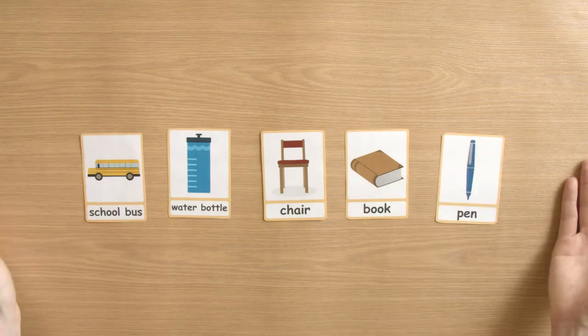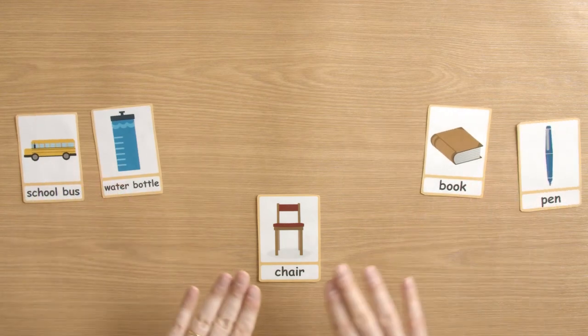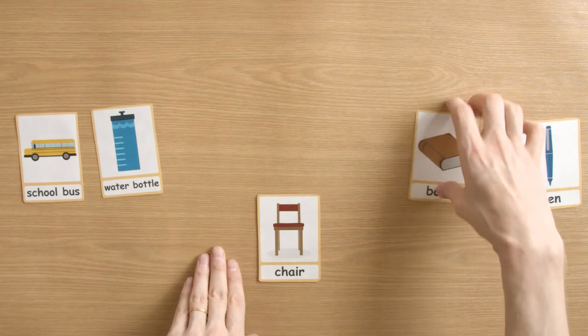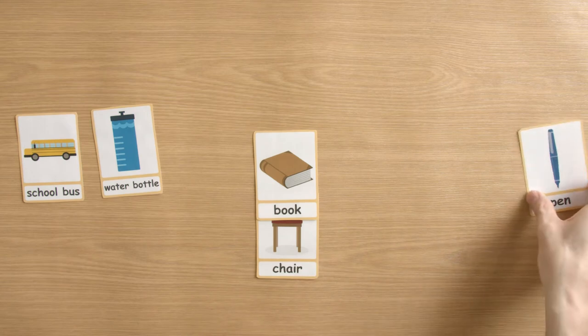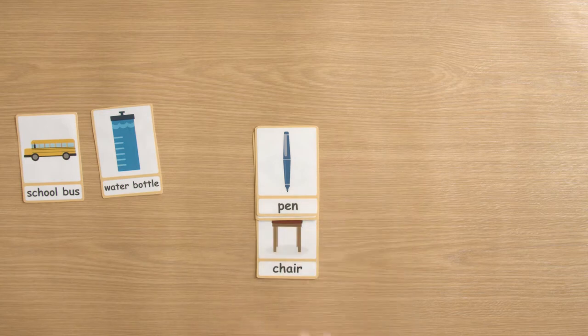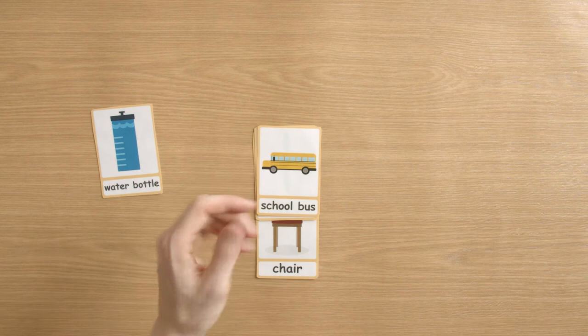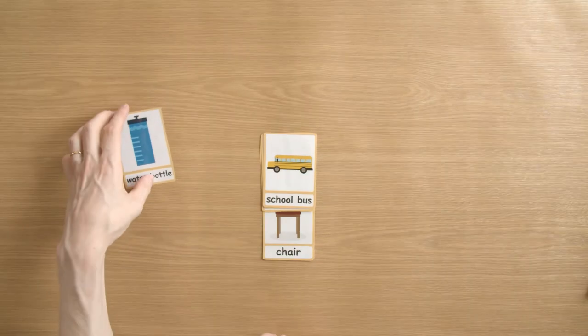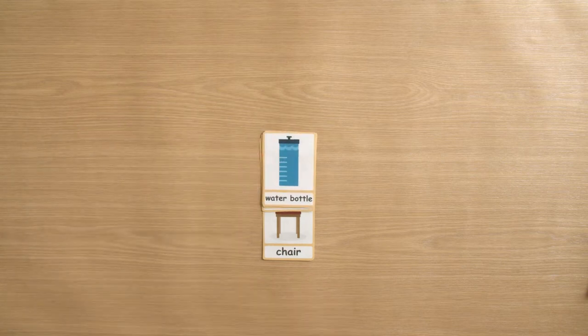Now a different structure might be prepositions. So you might be teaching on a chair, on my chair. A book is on the chair. A pen is on the chair. A school bus is on a chair and obviously everybody's gonna laugh because you can't put a school bus on a chair. And my water bottle is on a chair.